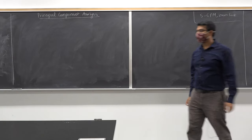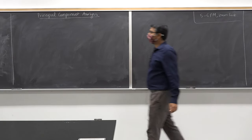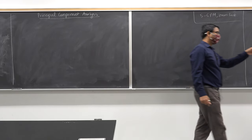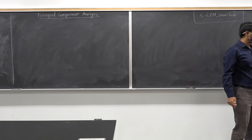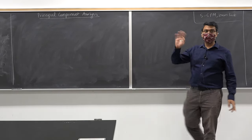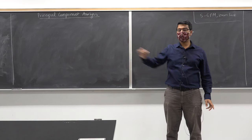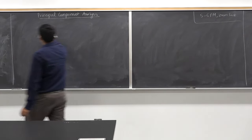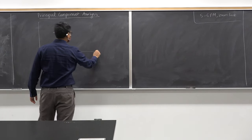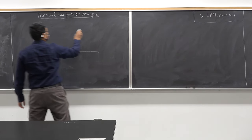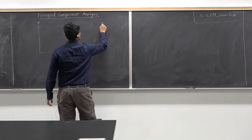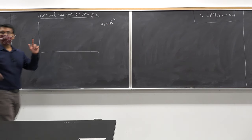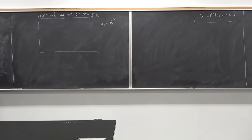Consider the following situation: suppose that this particular room has two sensors. There is one temperature sensor here and another temperature sensor on the other side of the room. My state, which is the temperature of the room, Xt, is in R² because I have two temperature sensors in the same room.